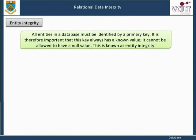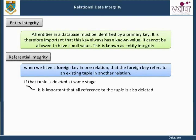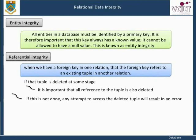Entity integrity: all entities in a database must be identified by a primary key. It is therefore important that this key always has a known value — it cannot be allowed to have a null value. This is known as entity integrity. We need to be certain that when we refer to another entity in our database, that it exists. This means that when we have a foreign key in one relation, that the foreign key refers to an existing tuple in another relation. If that tuple is deleted at some stage, it is important that all reference to the tuple is also deleted. If this is not done, any attempt to access the deleted tuple will result in an error. This can be implemented, for example, in SQL, where we can specify that if a request is received to delete a tuple from a table, one of the following actions will be carried out.